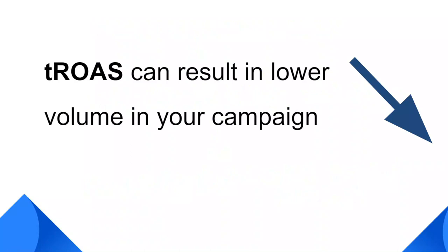When you switch from conversion bidding or target CPA strategy to target ROAS, you generally should expect lower search volume in your campaign. The reason is that target ROAS optimizes for your most valuable customers instead of the most conversions within your targets. To compensate for the loss of volume, you can switch your exact and phrase match type keywords in the search campaign to broad match type to aim for higher search volume.